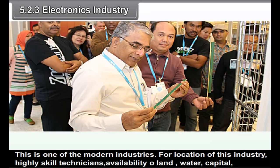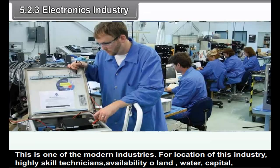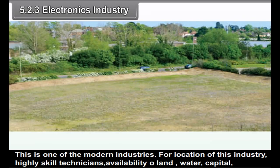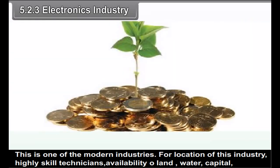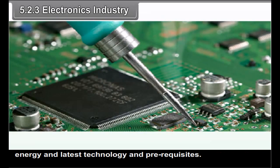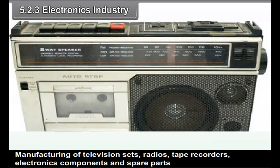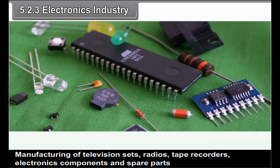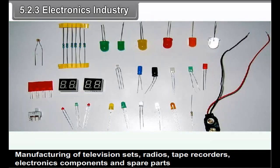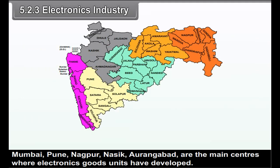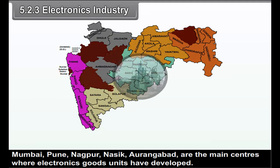5.2.3 Electronics Industry: This is one of the modern industries. For location of this industry, highly skilled technicians, availability of land, water, capital, energy and latest technology are the prerequisites. Manufacturing of television sets, radios, tape recorders, electronic components and spare parts come under the electronic industry. Mumbai, Pune, Nagpur, Nasik and Aurangabad are the main centres where electronics goods units have developed.